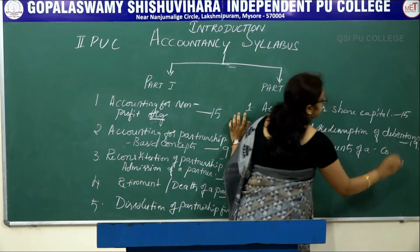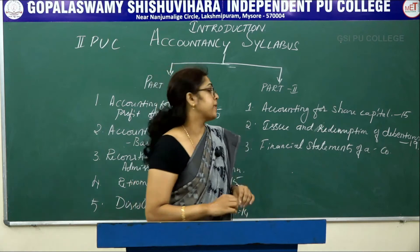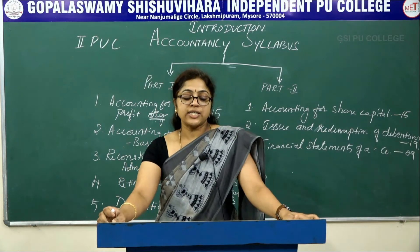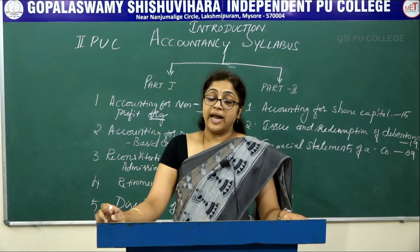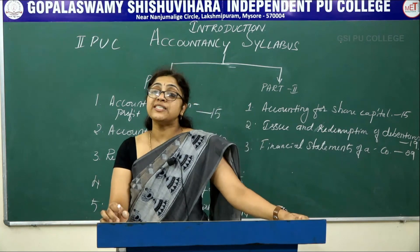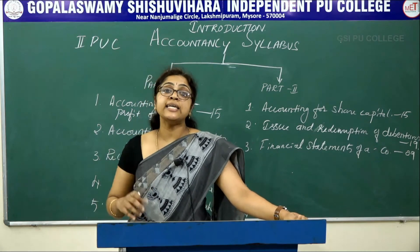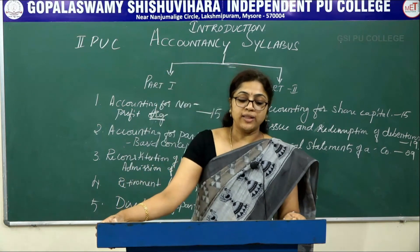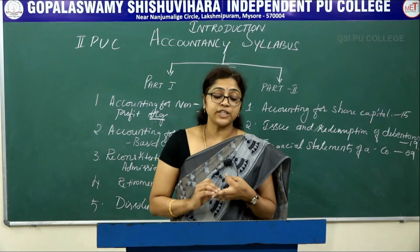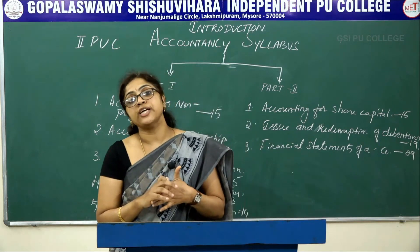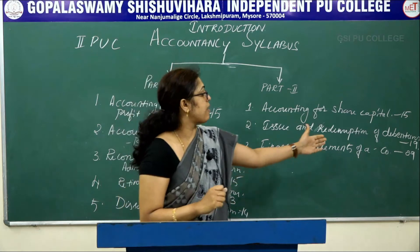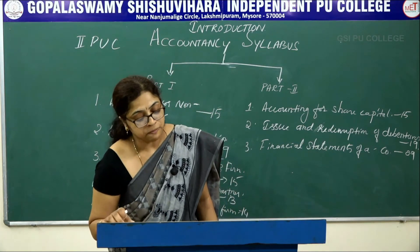The next chapter is Financial Statements of a Company. Total marks allotted to this chapter is 9. Financial statements are the end product of the accounting process, showing the financial position of the company and providing information to both internal and external users. In this chapter you learn about the meaning, nature, objectives, types, uses, and limitations of financial statements.